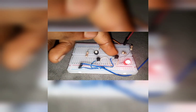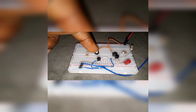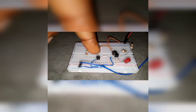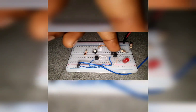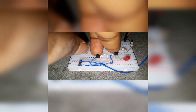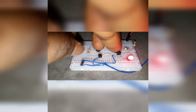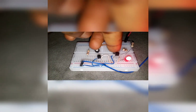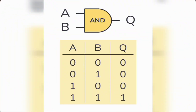Here is a breadboard demo of the OR gate using transistors connected in parallel. Any button that gets pressed — the LED turns on. If both get pressed, the LED also comes on.